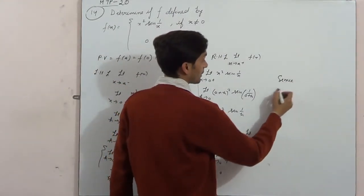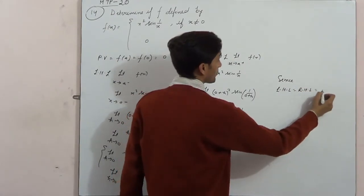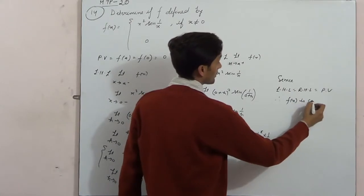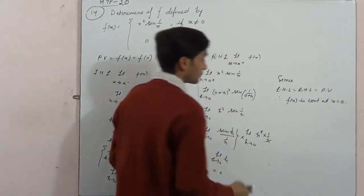Since left hand limit is equal to right hand limit is equal to point value, therefore f(x) is continuous at x is equal to 0.